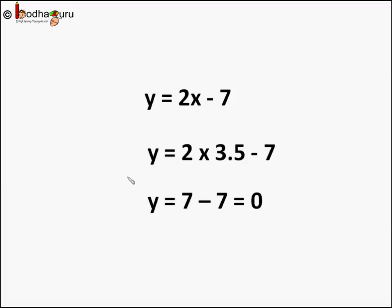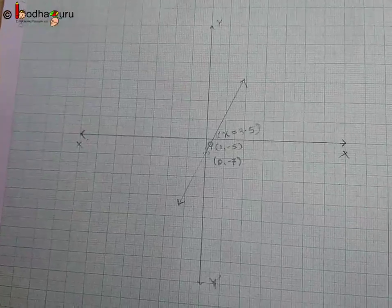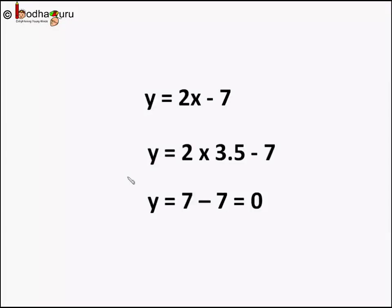So for x equals 3.5, y becomes equal to 0, so this value is a zero of the polynomial. So finding the zero of linear polynomial is easy. This line meets the x-axis at only one point on the graph, and in this example it was x equals 3.5. So remember, there is only one zero of a linear polynomial.